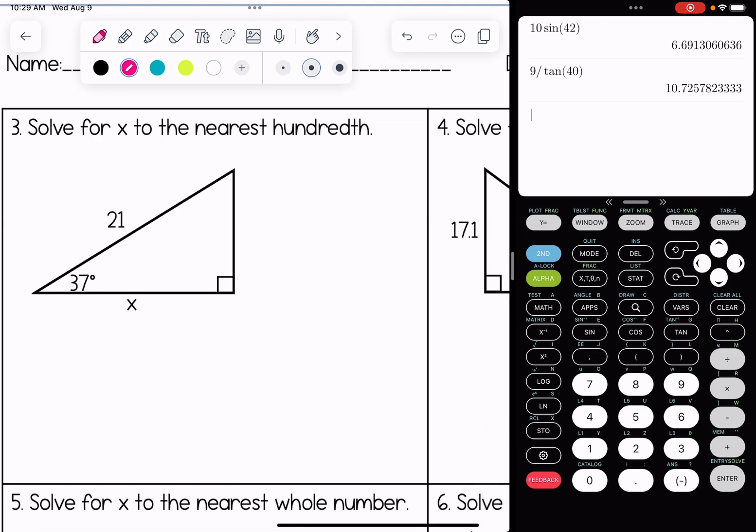Number three. Our hypotenuse is where the 21 is. The opposite side is blank. The adjacent side is where the x is. Just remember the opposite side is the one that's across from that acute angle that's labeled in the picture.